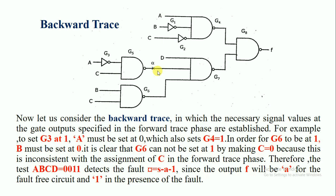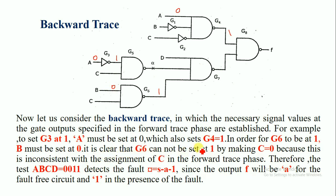For example, to set G3 to 1 we have to make A equal to 0. This will also set the G4 output equal to 1. In order for G6 to be at 1, the output of gate G6 must equal 1, so B must be set to 0. It is clear that G6 cannot be set to 1 by making C equal to 0.